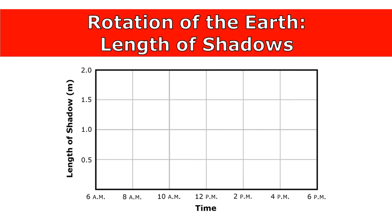We can use a graph to show how the length of shadows changes throughout the day. Shadows are longest at the very beginning and very end of the day, and they are shortest at noon. The shadows change gradually throughout the day in a very predictable pattern.